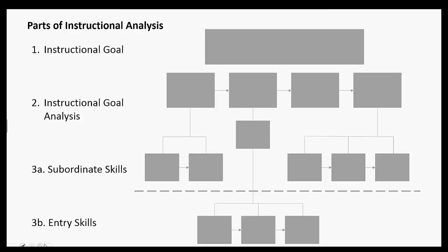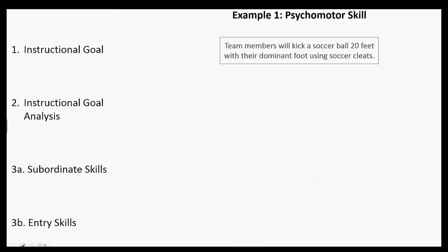That was a very general description of how this works. I thought it would be worth showing you an example — first of a psychomotor skill. Here's our instructional goal: team members will kick a soccer ball 20 feet with their dominant foot using soccer cleats. Let's try to break this down using an instructional goal analysis. Remember, it's not a perfect science — this is an iterative approach.